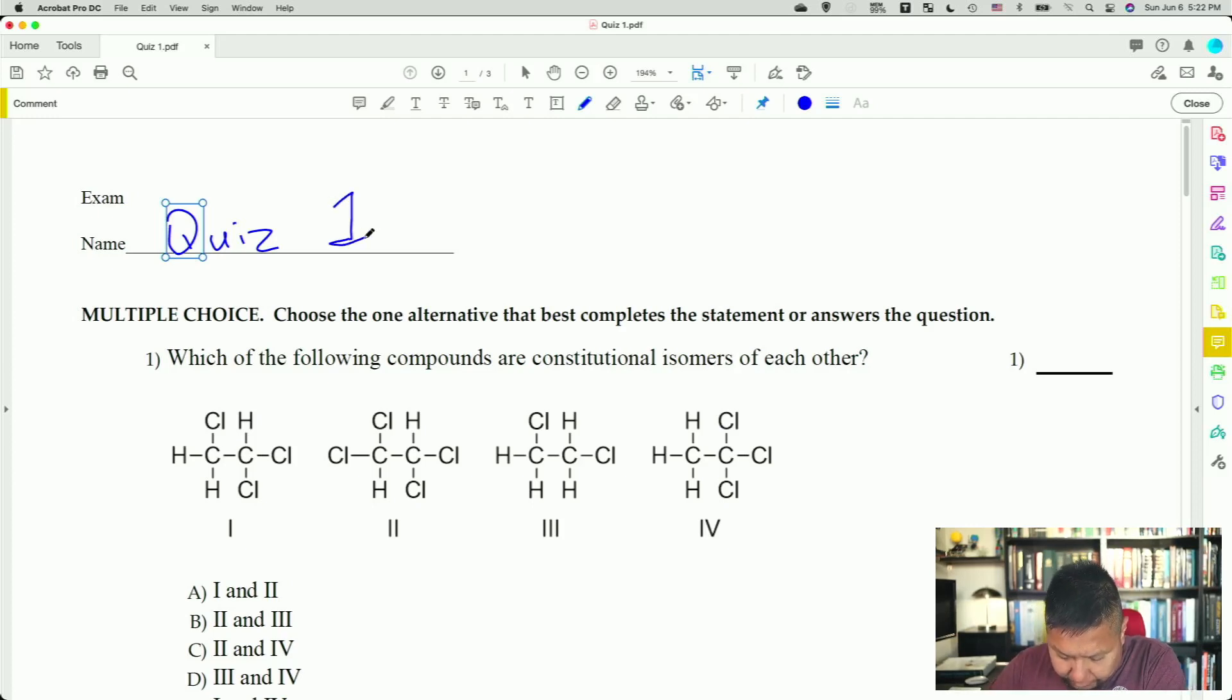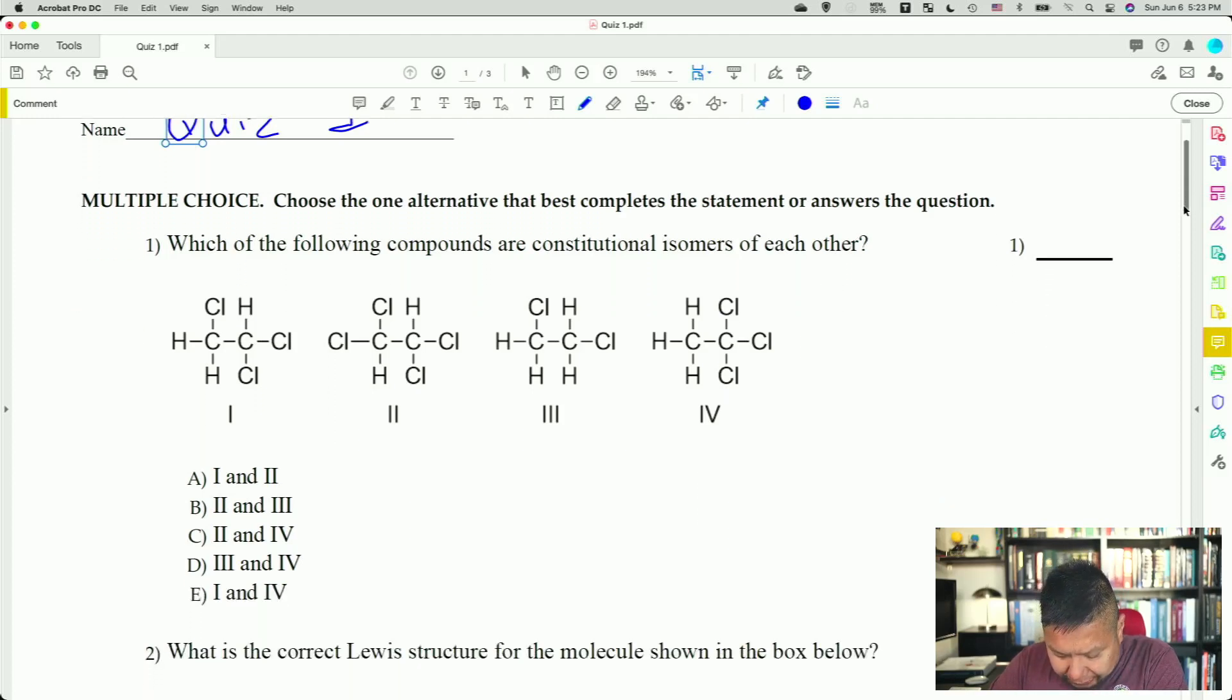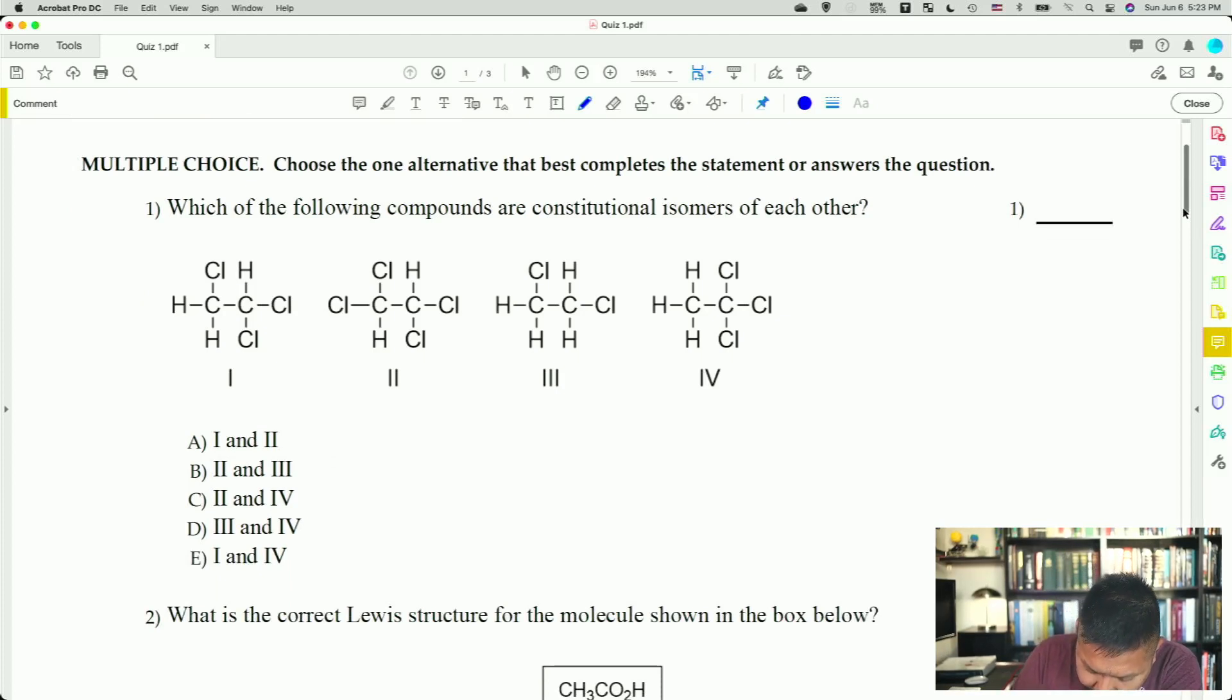The first question: which of the following compounds are constitutional isomers? Remember that constitutional isomer is an isomer in which the molecular formula is the same, but the connections at which the atoms are made are different. The structure is different. So this is actually a super easy question because you can look at these and see that structure one has three chlorines, structure two has four chlorines, so already you know those two are not constitutional isomers. Structure three has two chlorines, so that can't be it. But then structure four has three chlorines. So the answer then would be structure one and structure four. A.